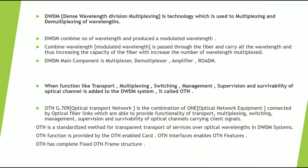DWDM, Dense Wavelength Division Multiplexing, is a technology used for multiplexing and demultiplexing of wavelengths. DWDM combines a number of channels and passes these channels over a single physical medium. At the receiver side, demultiplexing of the different channels is done. DWDM combines different wavelengths and produces a modulated output signal.